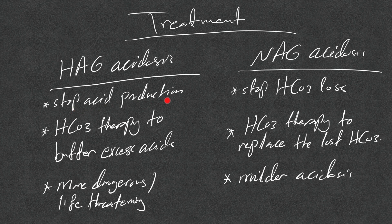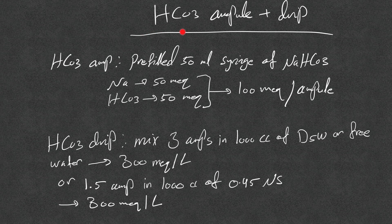For treatment: in high anion gap acidosis, stop acid production. In normal anion gap acidosis, stop bicarb loss. Unless you treat the underlying problem, treatment will be difficult. Bicarb therapy in high anion gap acidosis buffers excess acids, while in normal anion gap it replaces lost bicarb. High anion gap acidosis is more dangerous; normal anion gap is typically milder.